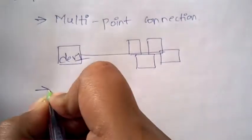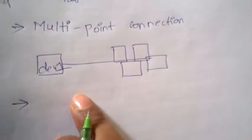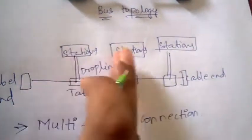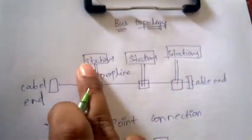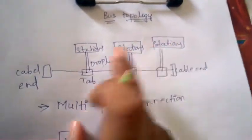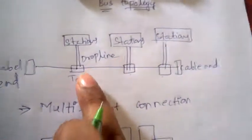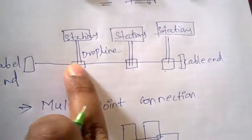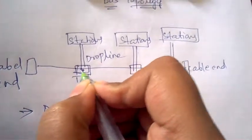Bus topology has a multi-point connection, and the nodes are connected to the bus cable. Nodes, stations, devices — we can call them anything. The nodes are connected to the bus cable with the help of taps and droplines. The dropline provides the connection, and the tap sinks into the cable.